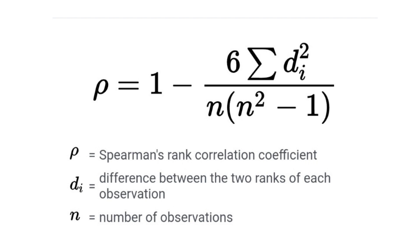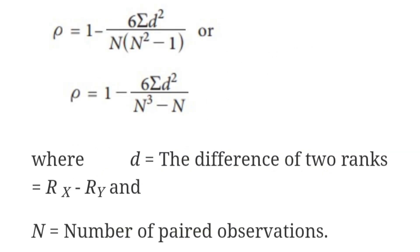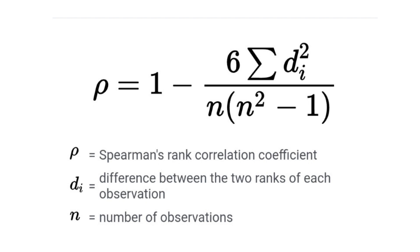In the formula, rho is the Spearman's rank correlation coefficient, D is the difference between the two ranks (Rank X and Rank Y), and N is the number of observations. Some books use capital N and may simplify the denominator as N cubed minus N. You can use any equivalent form of the formula. Since N is typically less than 30, the standard form applies.